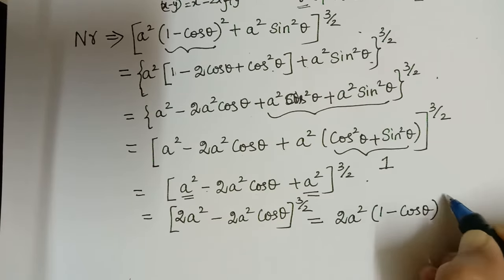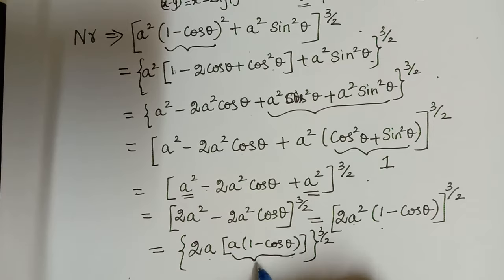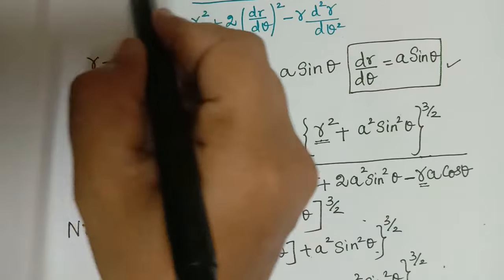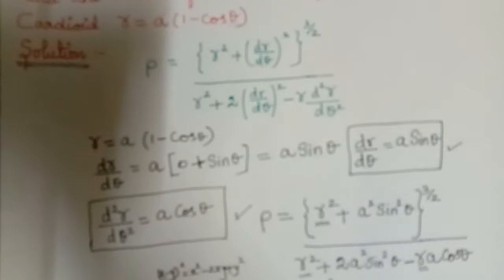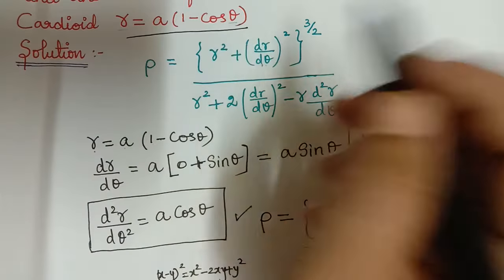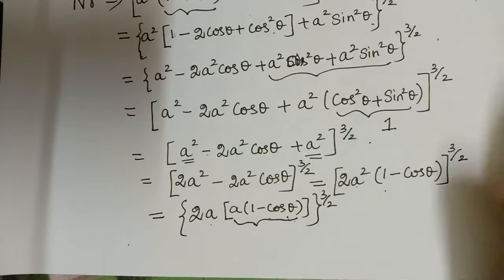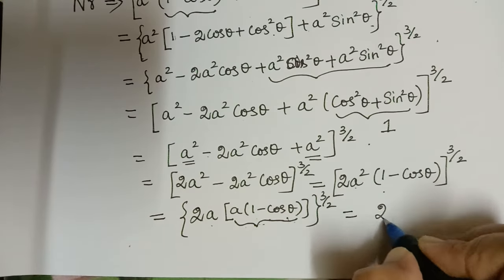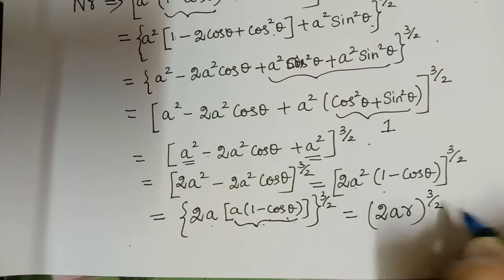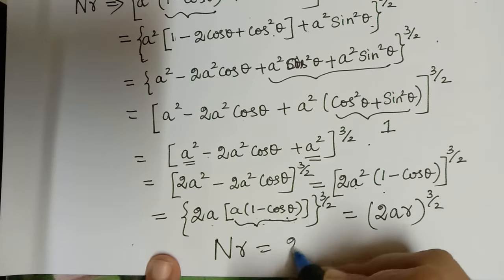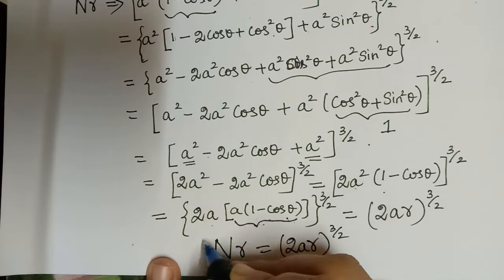Adding a² + a² gives 2a², so we have (2a² − 2a² cos θ)^(3/2). Taking out 2a² common gives (2a²)^(3/2) times (1 − cos θ)^(3/2). We can separate this as 2a times [a(1 − cos θ)]^(3/2). Since r = a(1 − cos θ), the numerator equals (2ar)^(3/2).